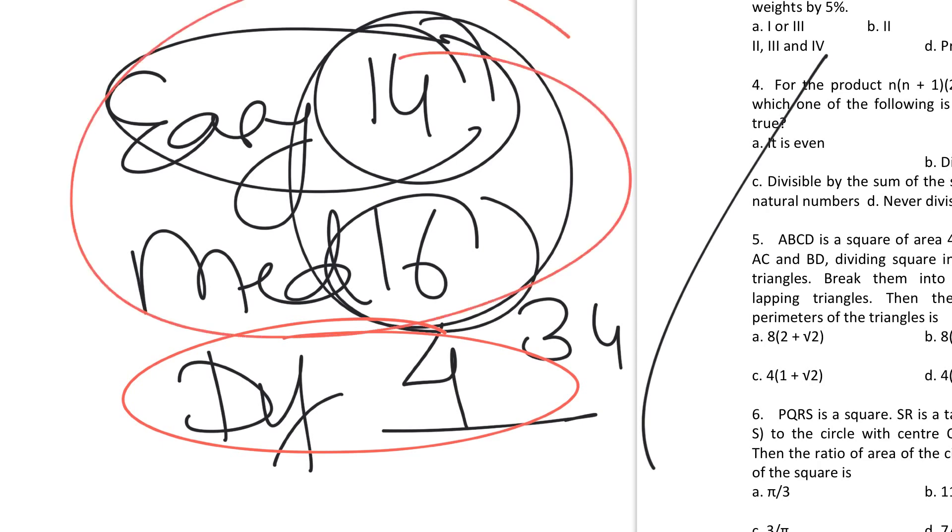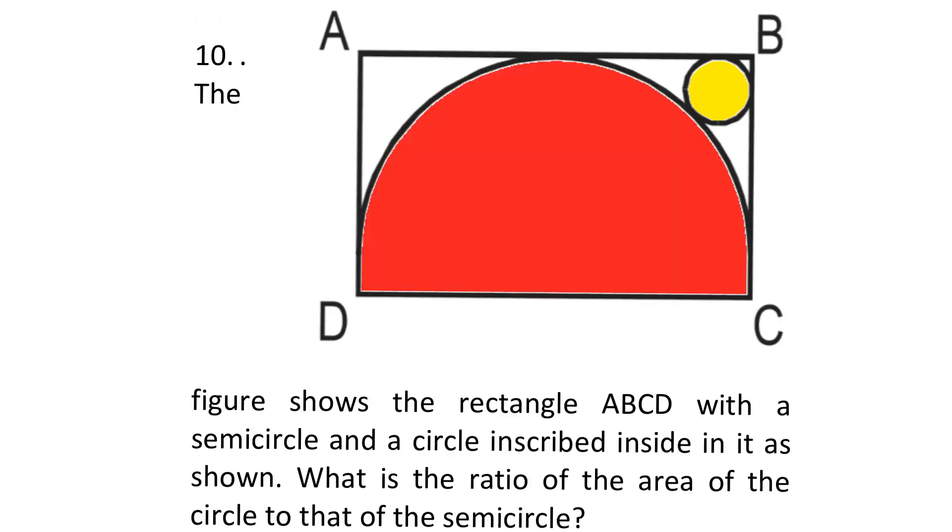At number six is geometry. Again, it's impossible to complete the paper without geometry. Do expect around 8 to 9 questions on geometry in the exam. Geometry is going to be one of the major areas which you need to work on apart from arithmetic to score more marks. This includes angles, triangles, circles, area, volume - the five things which you can expect in the exam. Number six is geometry, which includes lots of formulas to mug.